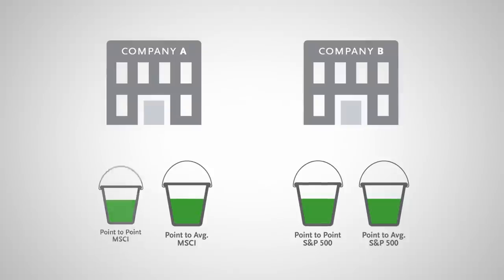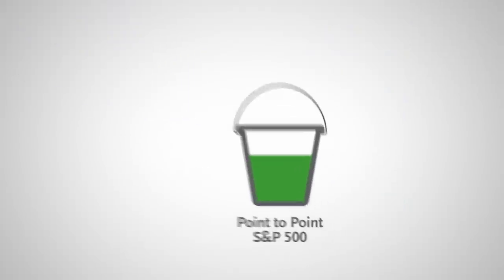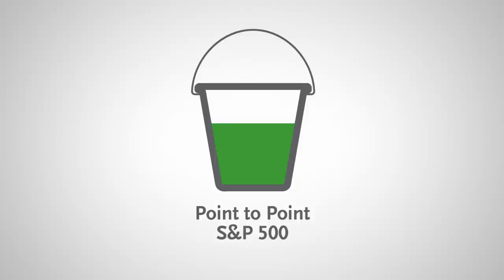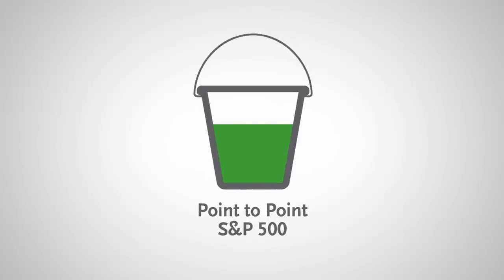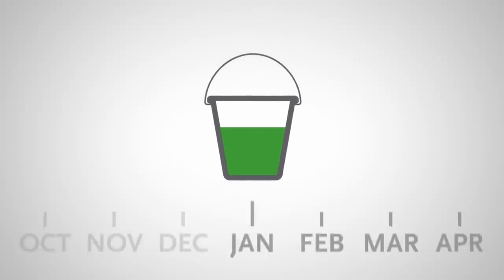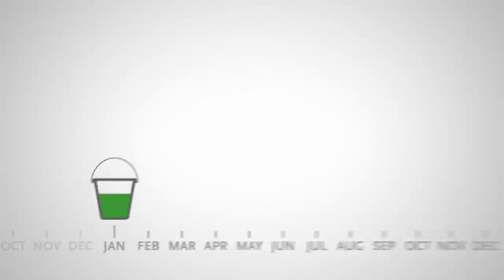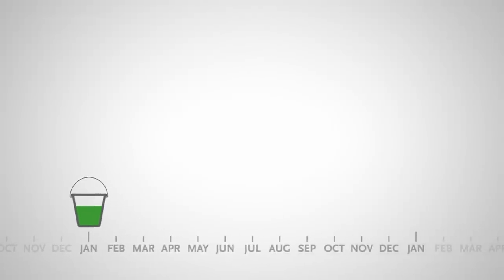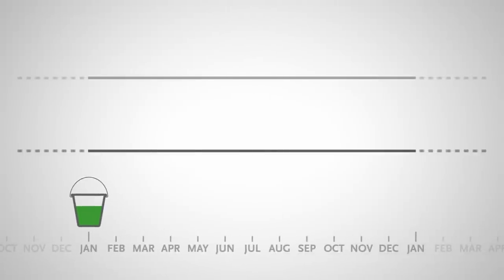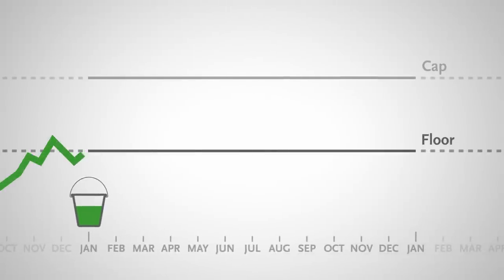We're going to show you a point-to-point strategy. The point-to-point strategy calculates the interest based on a set period of time, usually one or five years. The beginning and end of the time period are the two points.